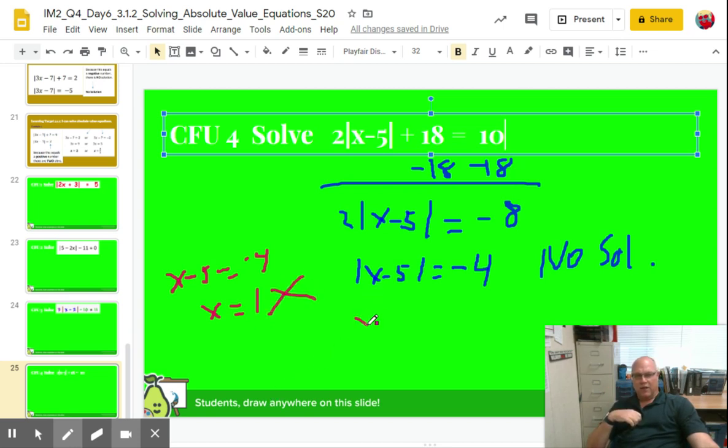All right. Let's see if you did it the other way. You went X minus five equals positive four, right? And then you would have added five to both sides. You would have got X equals nine.